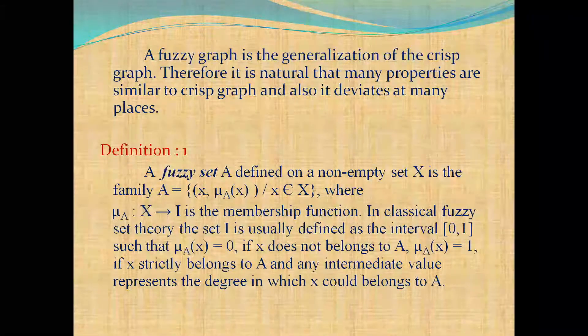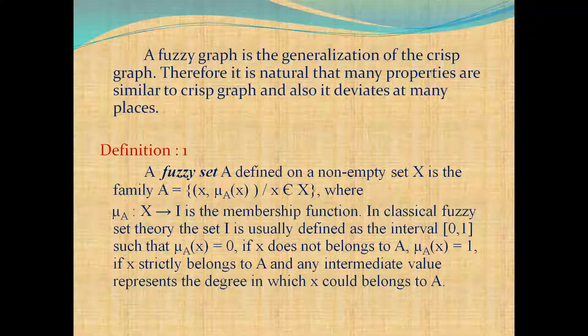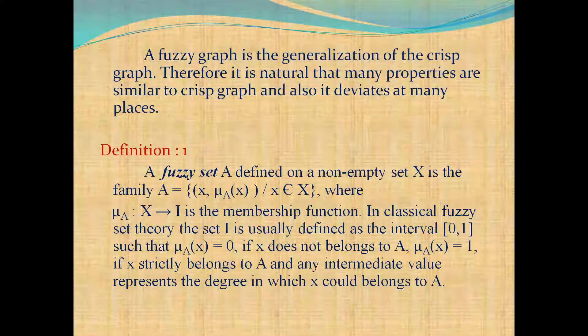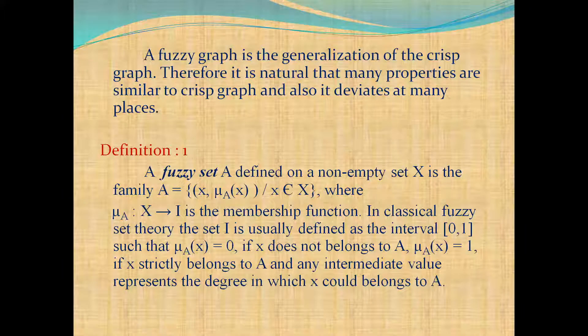A fuzzy graph is the generalization of the crisp graph. Therefore it is natural that many properties are similar to crisp graph and also it deviates at many places.